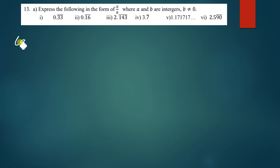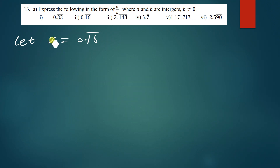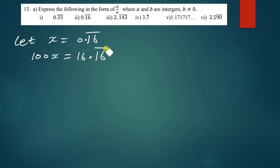Moving on to the next question: let x equal 0.16̄ (both digits 1 and 6 are repeating). We move the point to cover the two repeating numbers, which means moving two places, so we multiply by 100. Thus 100x = 16.16̄.